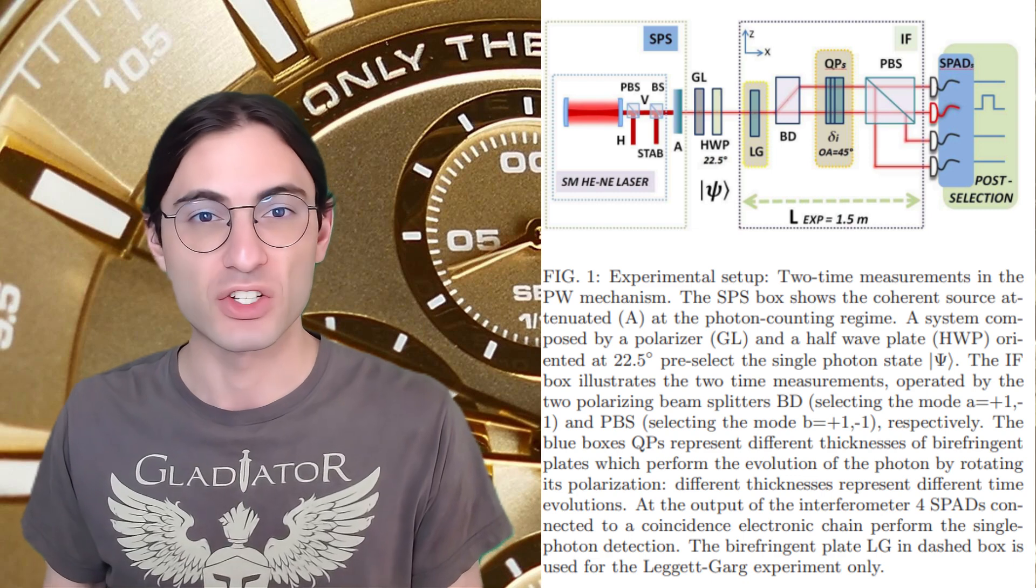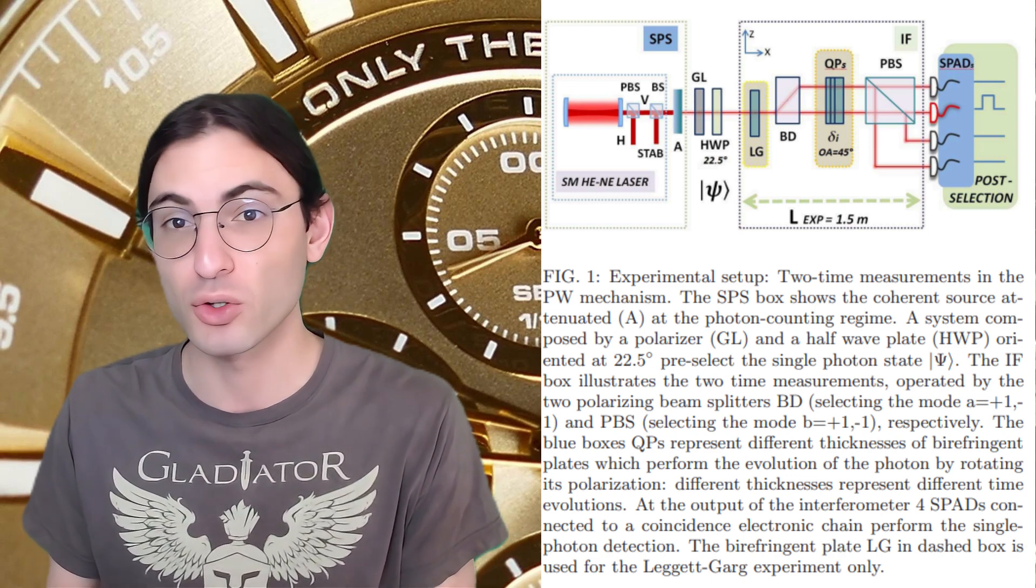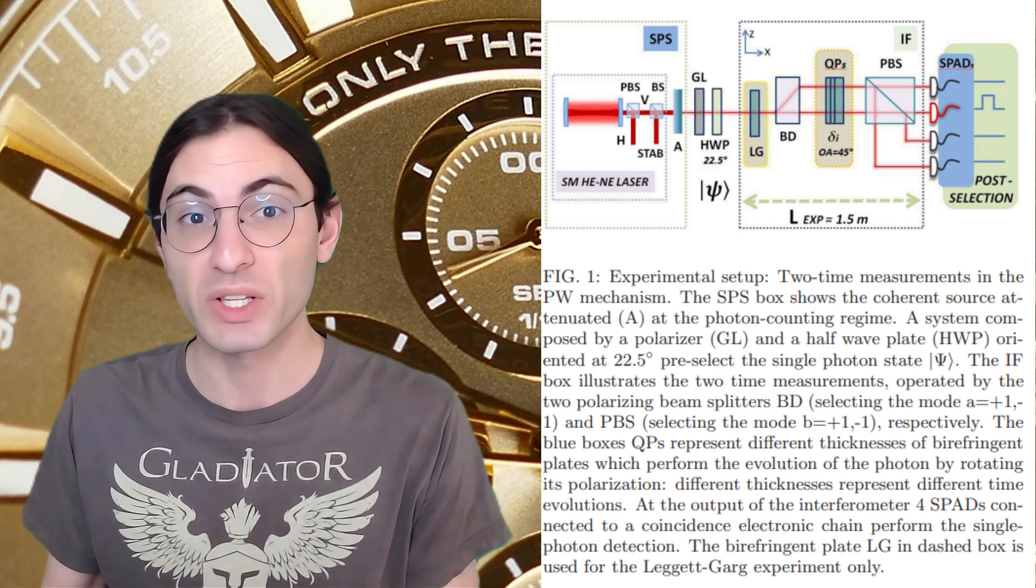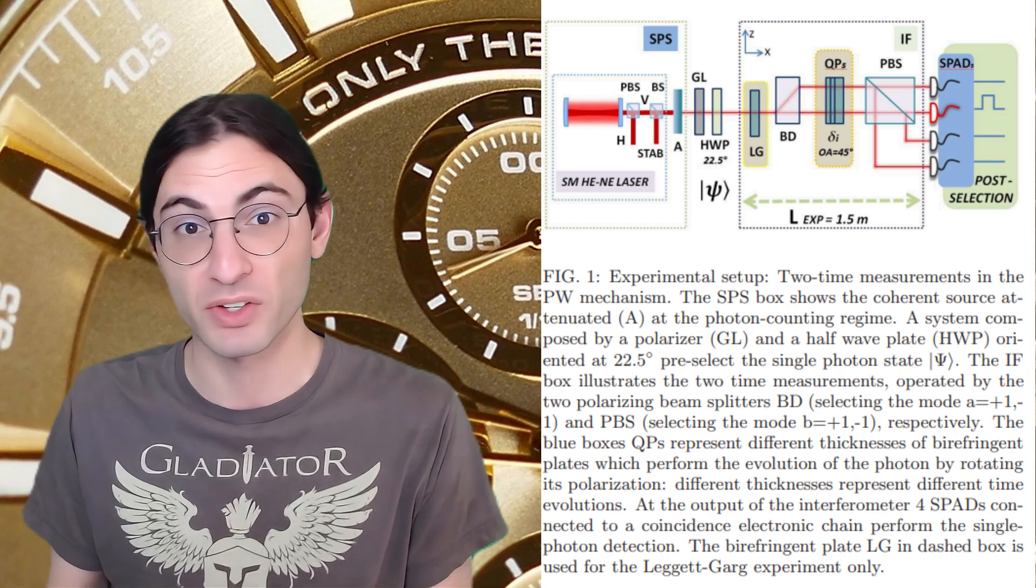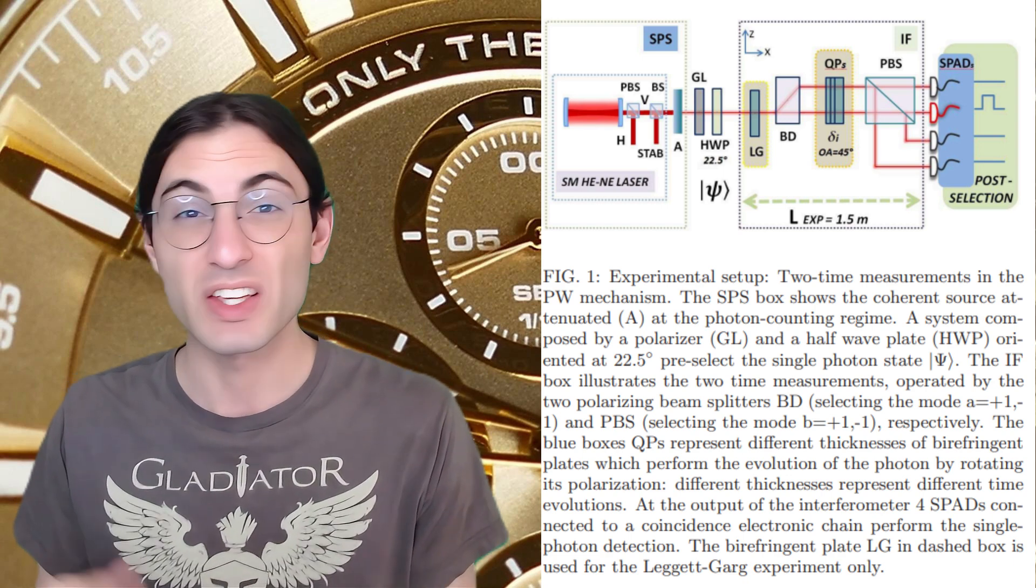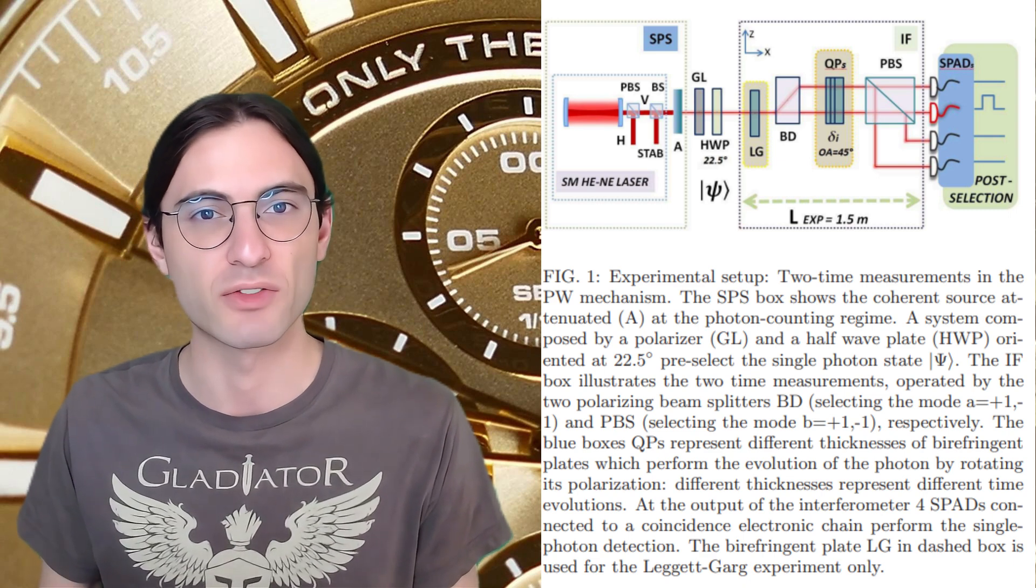These two polarizations were then passed through a quartz plate to rotate the polarizations by an amount proportional to the width of the plate. This width is then associated with the duration on the clock, because the clock is measured by the horizontal position of the photon. Finally, they split the photon one more time and measure the probability of the photon ending up in each of the four final states.